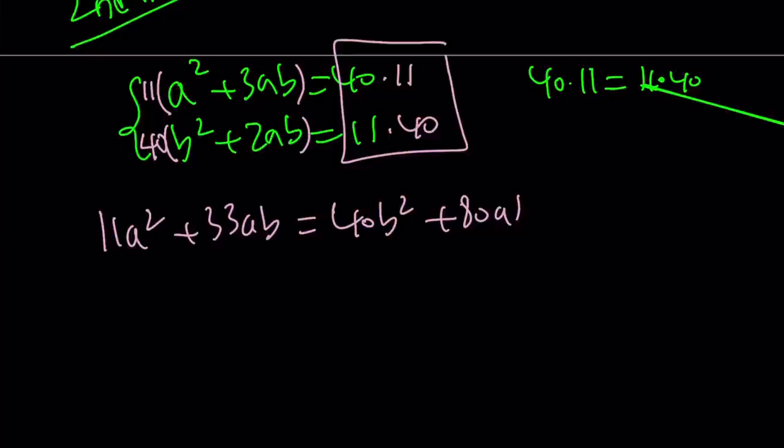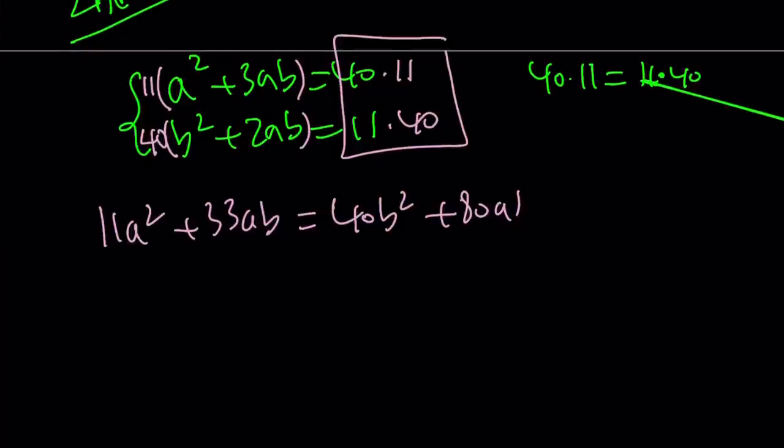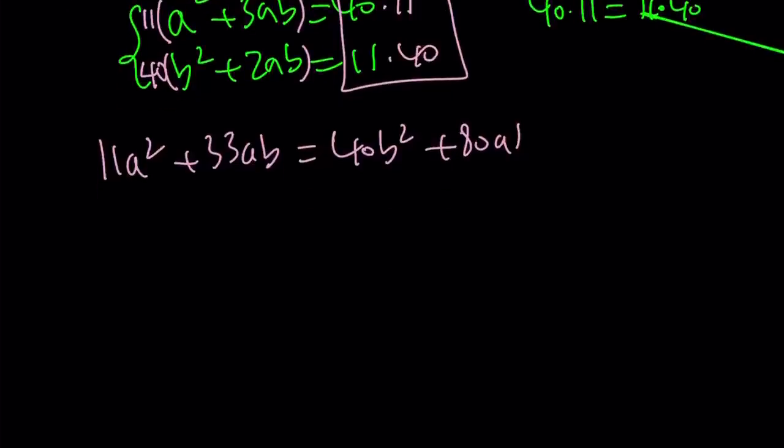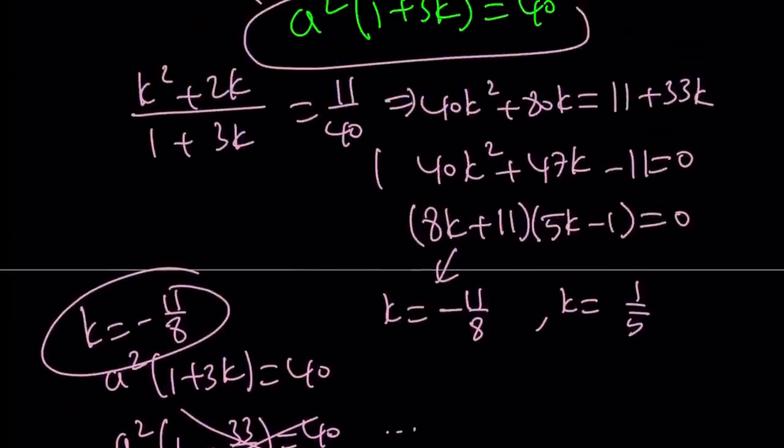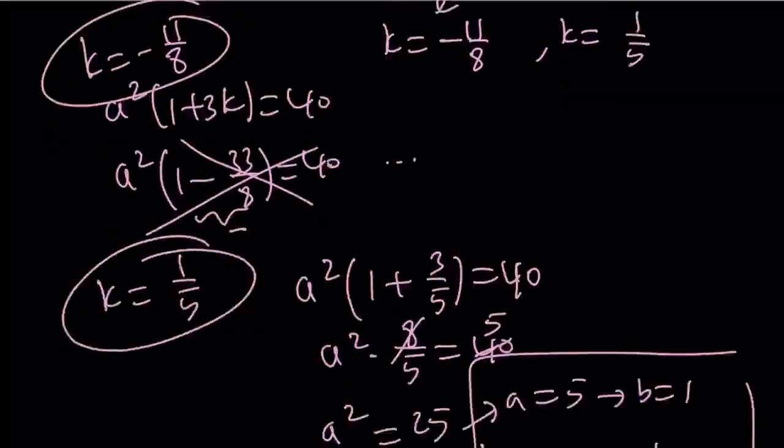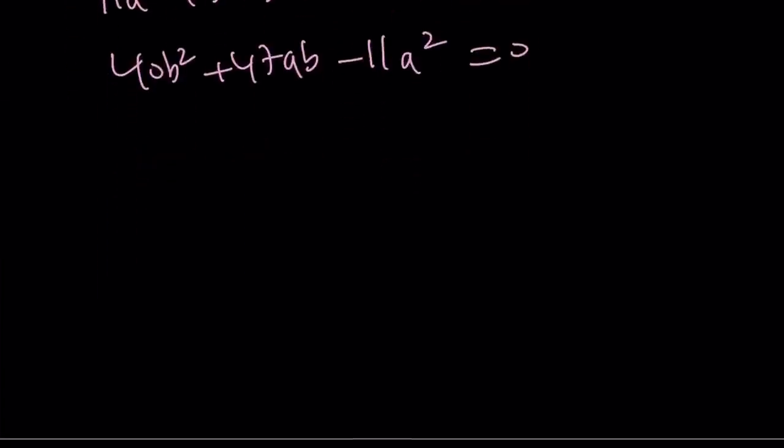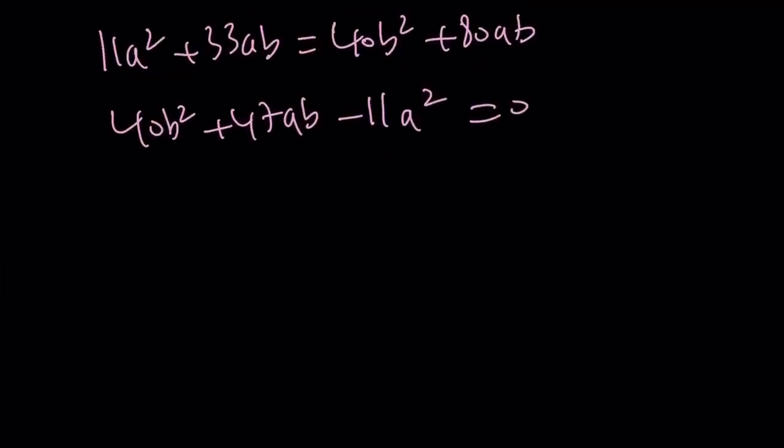Which means you have the same expression on the left-hand side. 11a squared plus 33ab equals 40b squared plus 80ab. These numbers should be familiar. Yes, those are the same ones as we got before in the quadratic equation. To keep a long story short, let's put everything on the same side. 40b squared plus 47ab minus 11a squared equals 0. The coefficients are exactly the same thing. That's why I call those methods very similar.